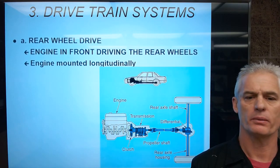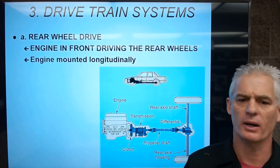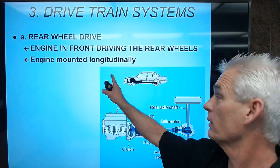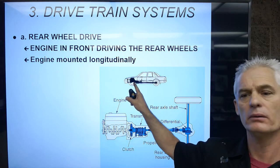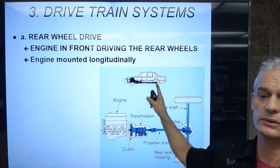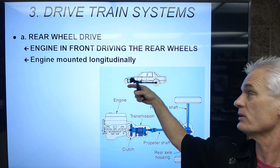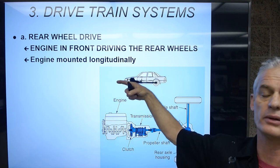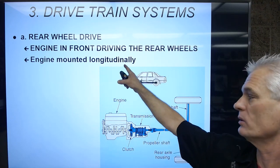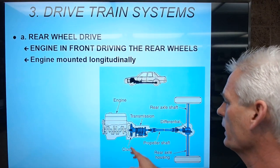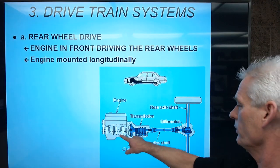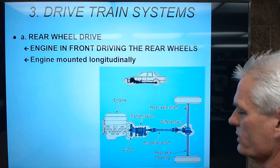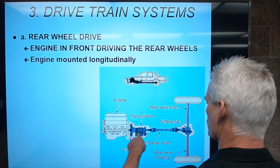The first layout is what we call rear-wheel drive. Rear-wheel drive is when the engine up here is in the front of the vehicle and it's driving the rear wheels. Typically the engine is mounted front to back, so the front of the engine is at the front of the car — we say that it's longitudinally mounted. What you're looking at in this picture is a sideways view of the engine and transmission.